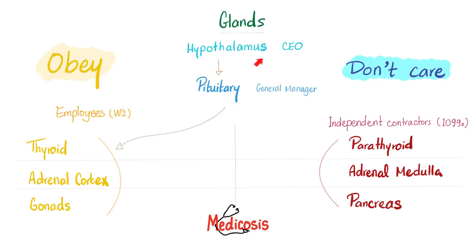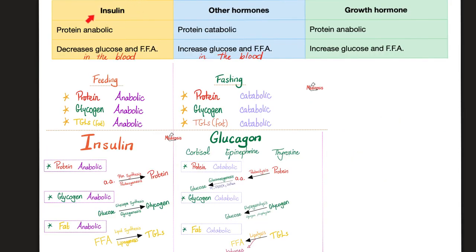Do you remember the story of the CEO followed by the general manager? The pancreas is an independent contractor, meaning the pancreas is not influenced by the pituitary. Insulin is in one land; all the other hormones are in a separate, opposite land. Insulin is anabolic. All the others are catabolic.